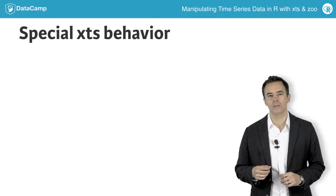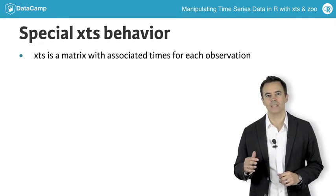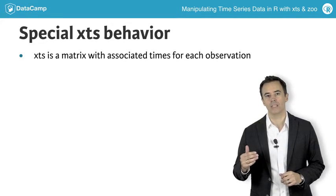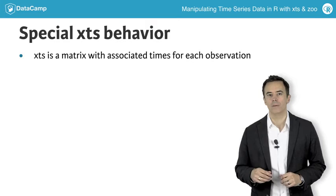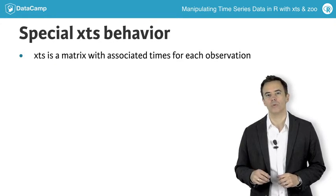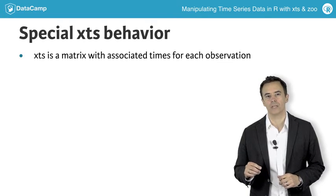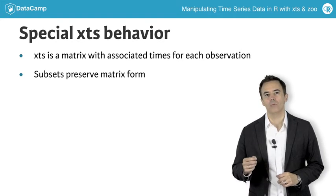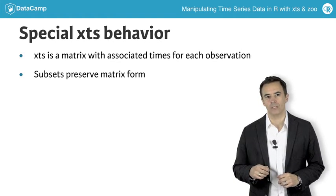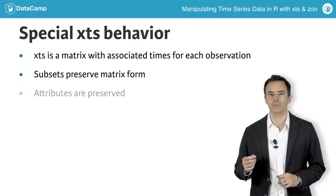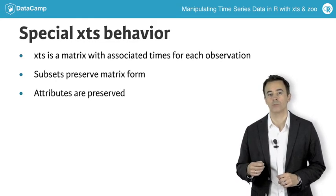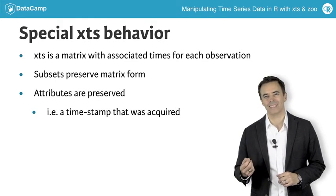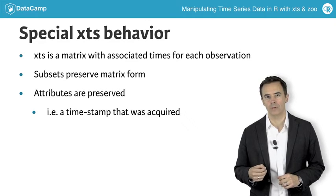So what makes XTS special? As I mentioned before, XTS is a matrix that has associated times for each observation. Basic operations work just like they would on a matrix, almost. One difference is that subsets will always preserve the object's matrix form — choosing one or more than one column always results in another matrix object. Another difference is that attributes are generally preserved as you work with your data, so if you store something like a timestamp of when you acquired the data in an XTS attribute, subsetting won't cause that information to be lost.